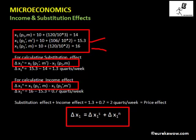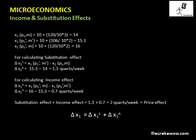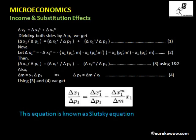Now let us derive the Slutsky equation. We have the expression delta X1 equals delta X1^S plus delta X1^N. Let us divide both sides by delta P1. We also assume that delta X1^M equals minus delta X1^N — that is, delta X1^M is the negative of delta X1^N. We will substitute this in equation 1.